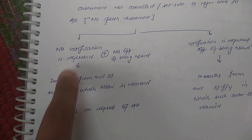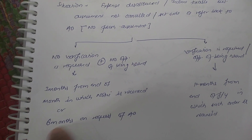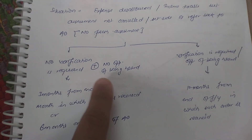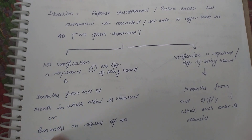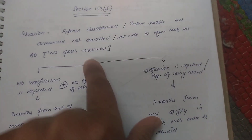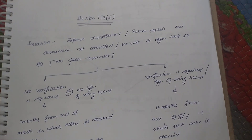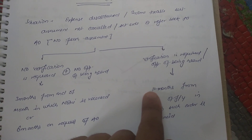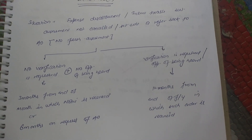To correct myself — the 6 months is additional to the 3 months, so total is 3 months plus 6 months. In the second case, if verification is required or opportunity of being heard needs to be given to the assessee, the time limit will be 12 months from the end of the financial year in which such order is received.